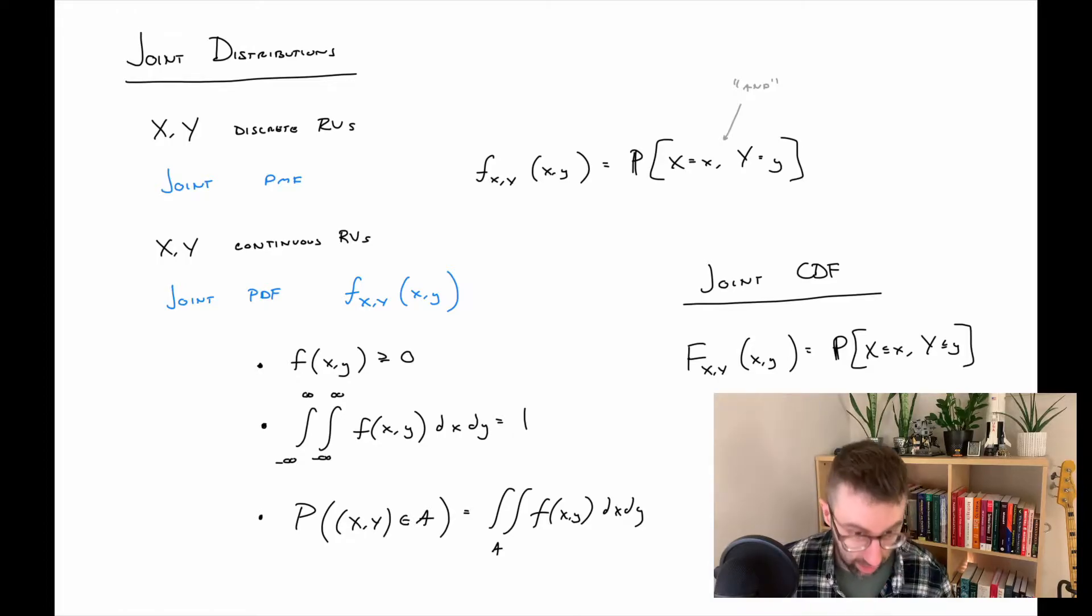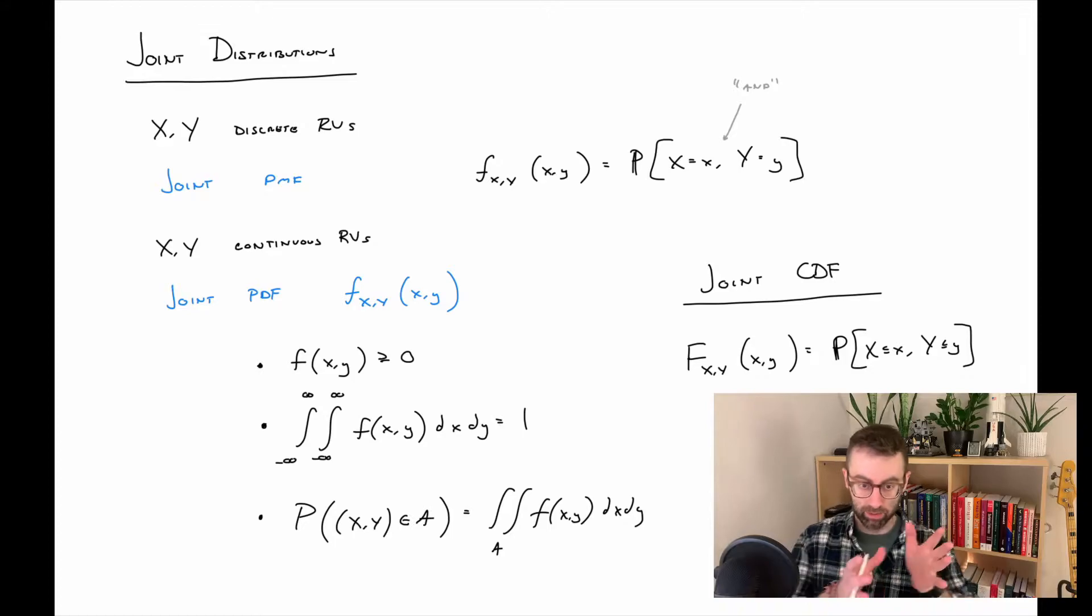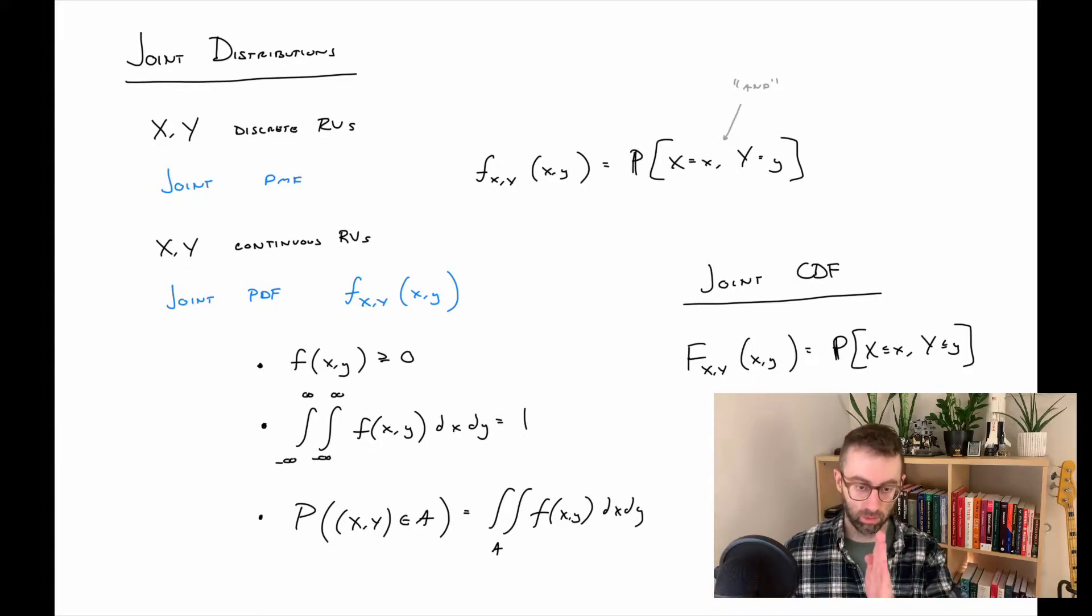It's zero or greater everywhere. If you integrate over the whole region, which now spans two variables, it'd be one. And then calculating probabilities is integrating over a particular region. And then for both, the joint CDF is the probability that you're below two values simultaneously.